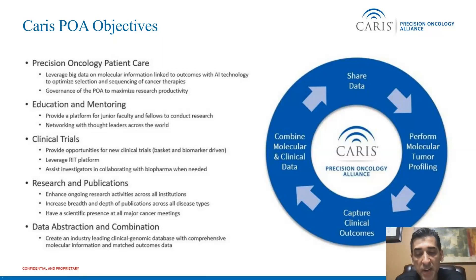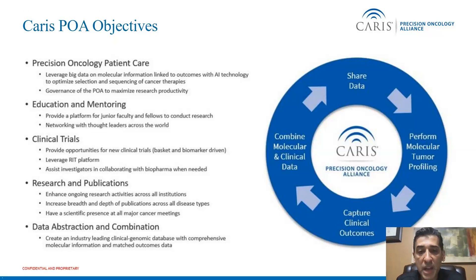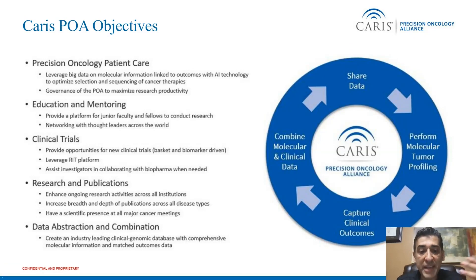From a Karis Precision Oncology Alliance objectives standpoint, it is trying to identify how best to take care of patients with cancer from a precision oncology perspective. In 2022, when you take care of patients with cancer, you must know the molecular underpinning of the tumor — otherwise you cannot provide the best care. Education and mentoring is an important objective, as are clinical trials, research, publications, help with data abstraction, and collaboration.